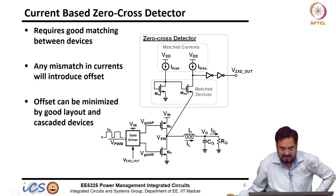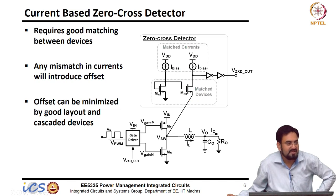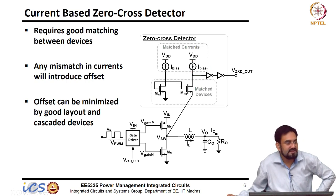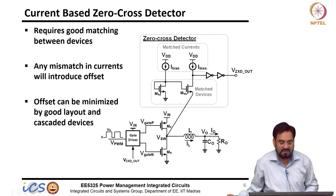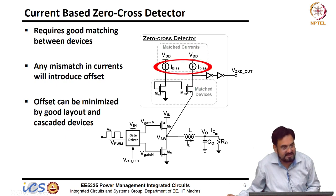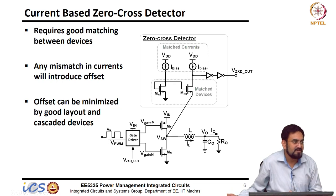This is your current-based zero-cross comparator. If you look at this, it is nothing but a current-starved inverter. Instead of a PMOS switch you have a high-side bias current here, and your input is received by a common-gate configuration — the inverter is usually implemented using common-source, but this is common-gate. Now think about this: if these two currents are the same, depending on whether the bottom current or top current is higher, it will decide your output state whether it will be 0 or high.